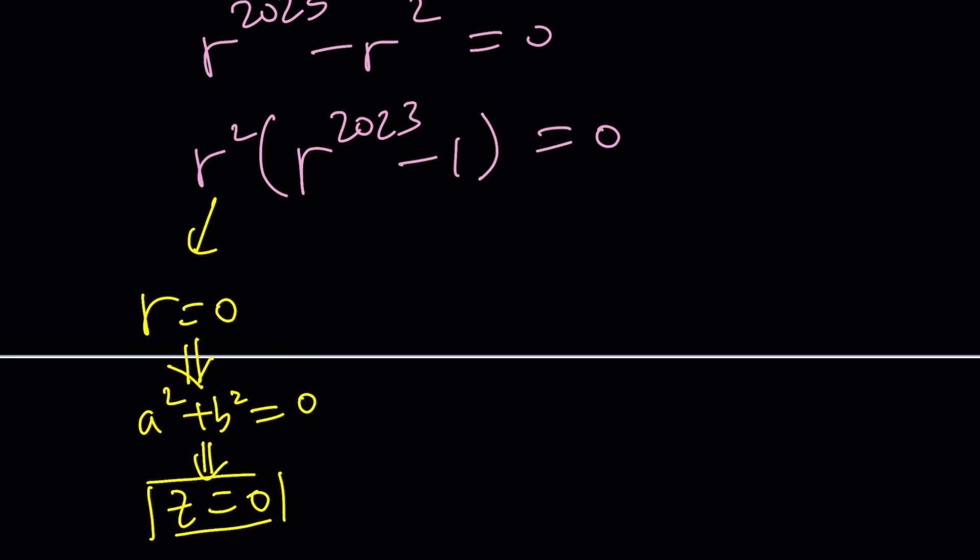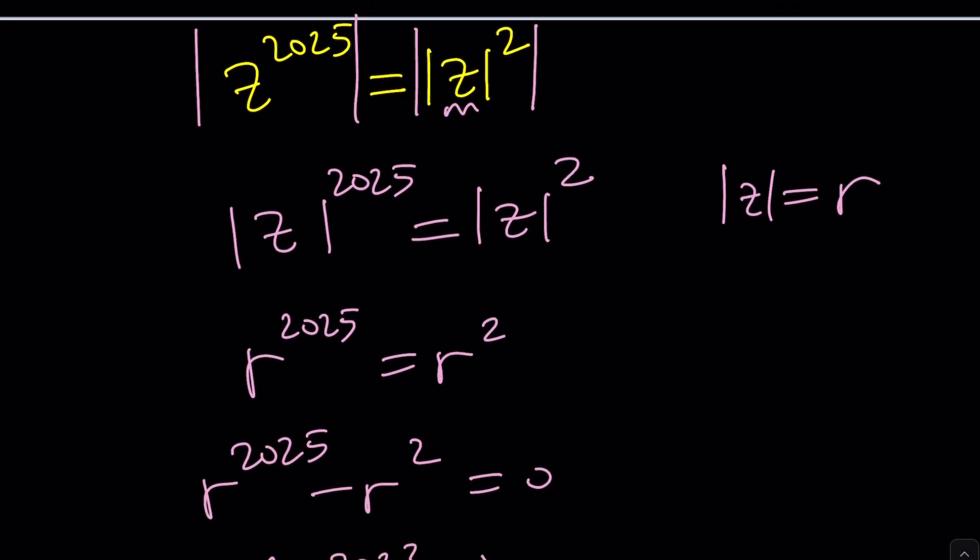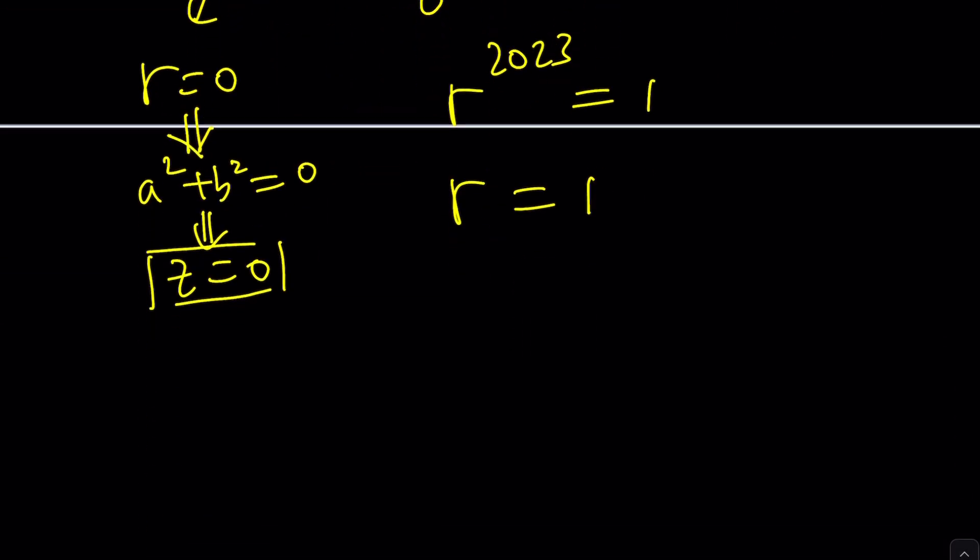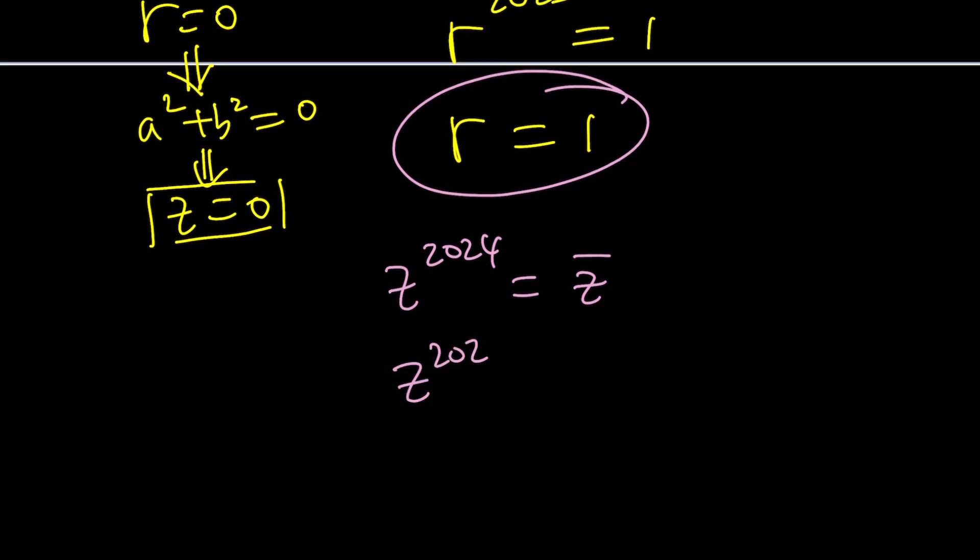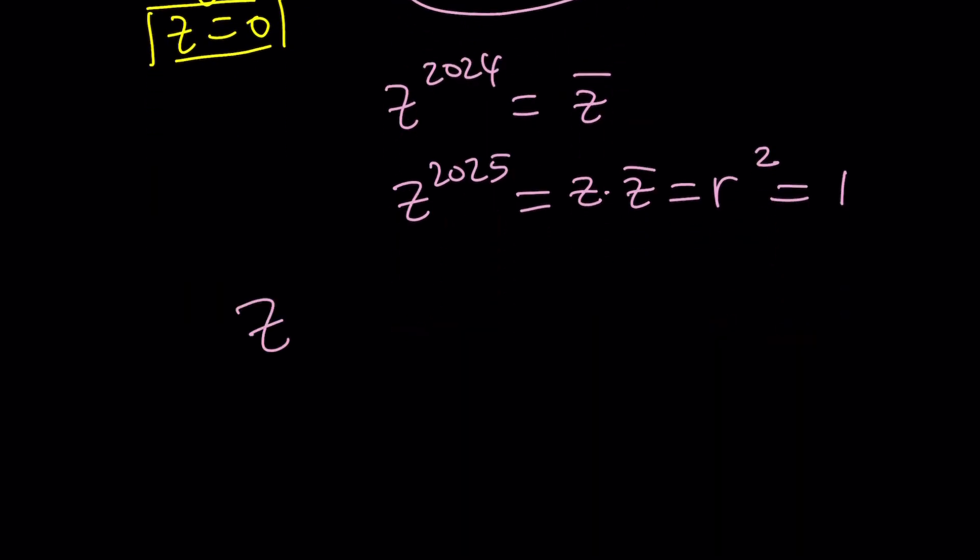Think about it. If z is zero, zero to the power 2024 is zero, which is the same as a-bi. This is more interesting. Let's go ahead and do it. r^2023 = 1. Remember, r is a real number. It's the modulus. Come on, it can't even be negative. So this means r = 1. What does that mean? It means that we have a complex number, and this gave us z·z̄, which was |z|^2, which is r^2. But if r is one, r^2 is one. Therefore, as a conclusion, z^2025 = 1.